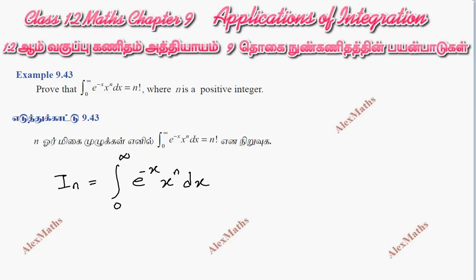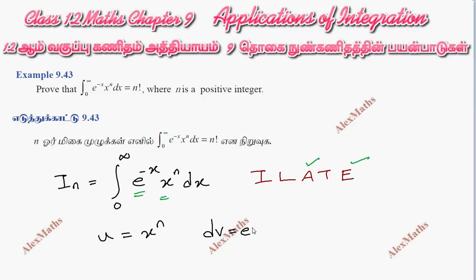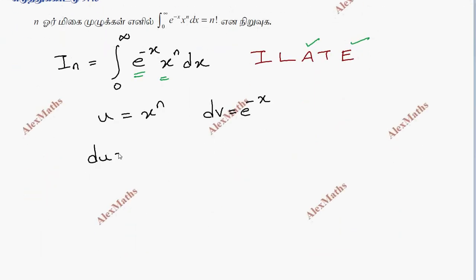This is the product of two different functions, so this is integration by parts. We identify: u equals x to the power n, and dv equals e to the power minus x. Then du is n times x to the power n minus 1 dx, and v equals e to the power minus x divided by minus 1.